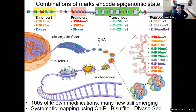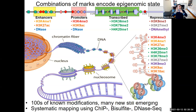Perhaps the coolest regions are enhancers. Unlike promoters right next to transcription start sites, enhancers can be very distal — sometimes a million nucleotides away — looping back to contact promoters. Enhancers are extremely dynamic across cell types, while promoters are stable. Enhancers are marked by H3K4 monomethylation, H3K27 acetylation, and DNA accessibility — though to a lower degree than promoters.